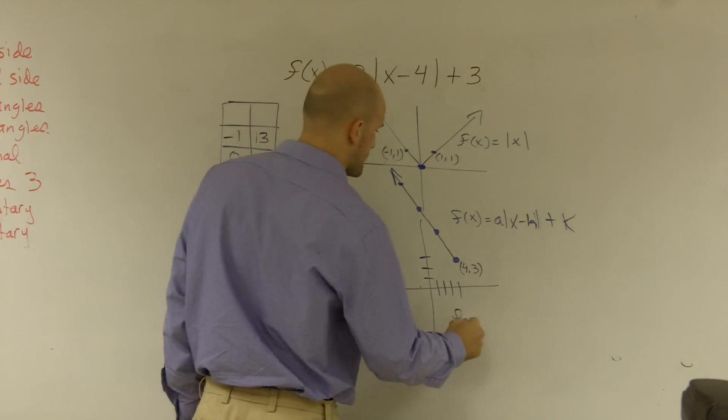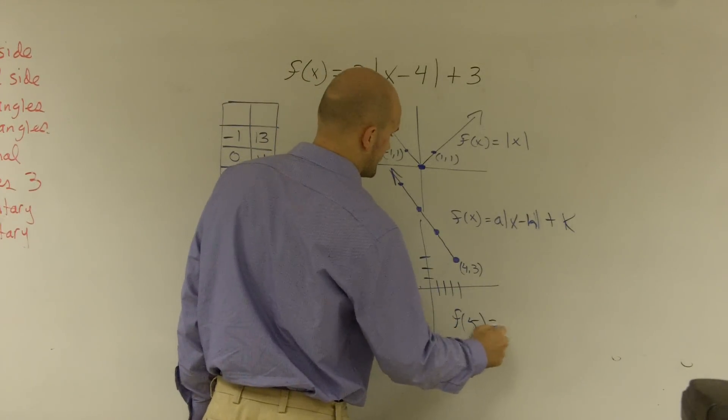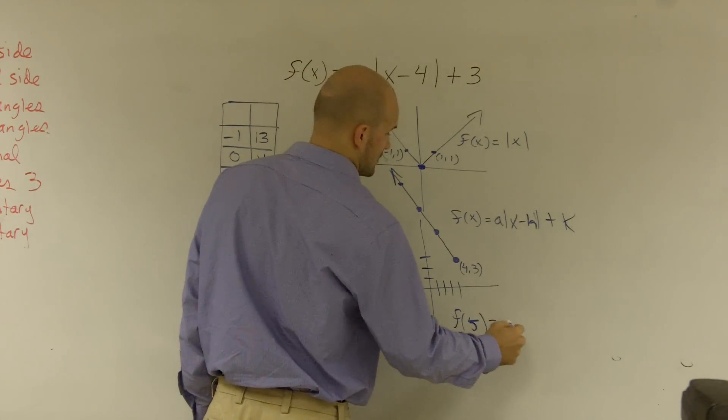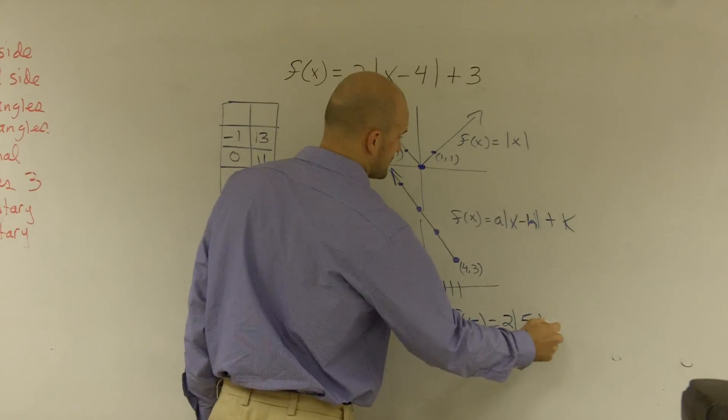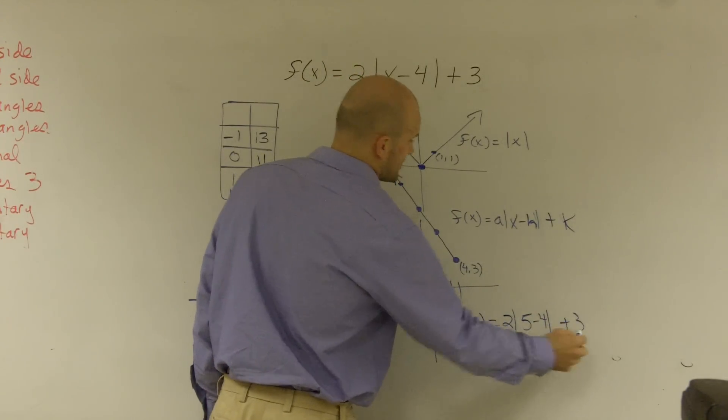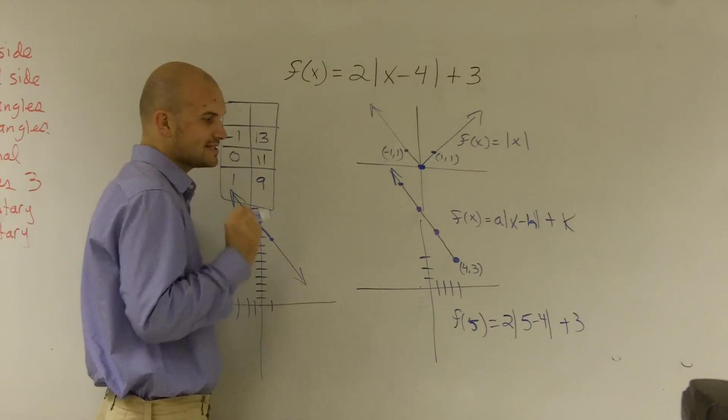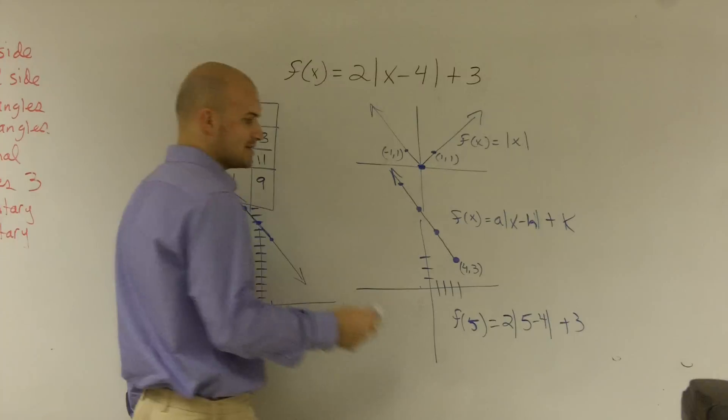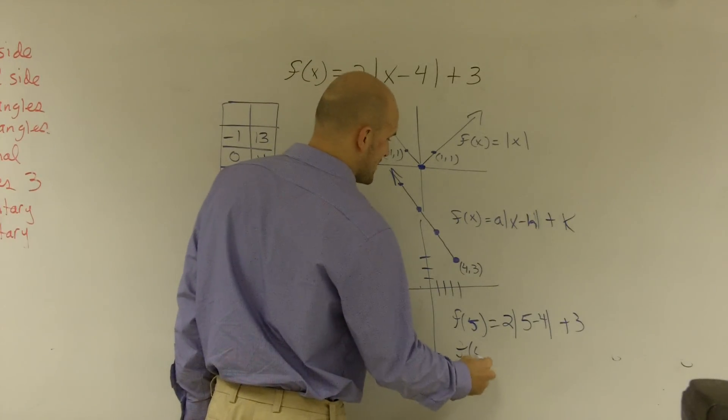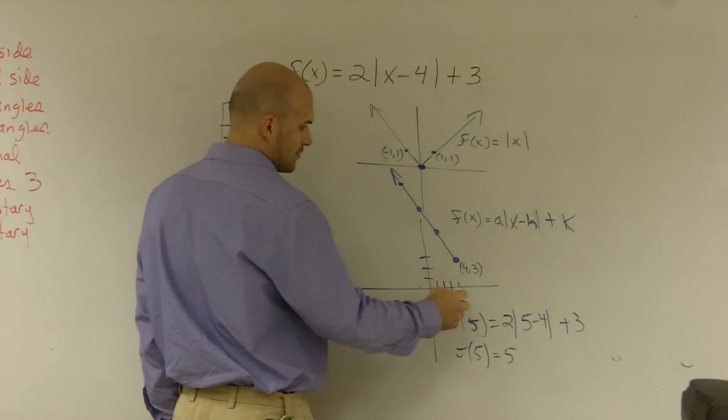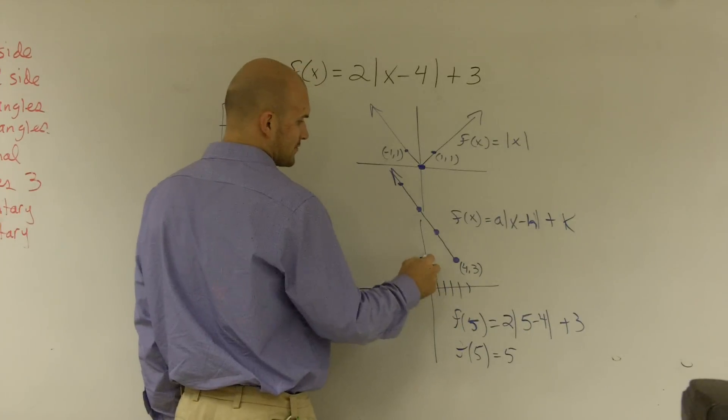So I'll do f of 5 equals 2 times x minus 5, or 5 minus 4 plus 3. Well, 5 minus 4 is 1. Absolute value of 1 is 1. 1 times 2 is 2. 2 plus 3 is 5. So f of 5 equals 5. So let's go over 5 and then go up 5. 1, 2, 3.